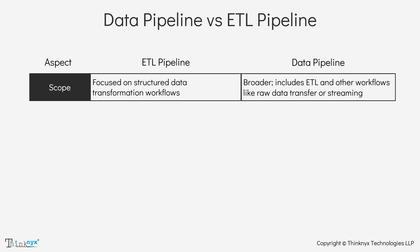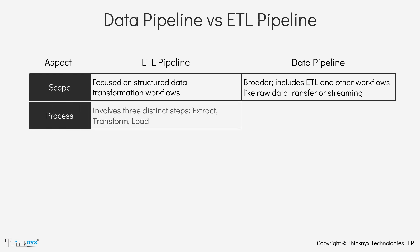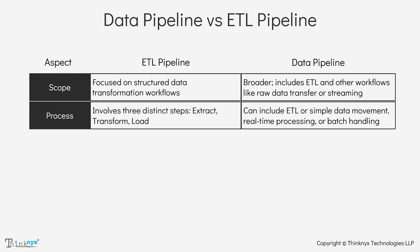The next aspect is process. ETL Pipeline involves three distinct steps — extract, transform, and load — while a data pipeline can include ETL or simple data movement, real-time processing, or batch handling.